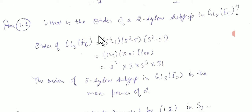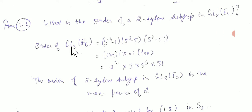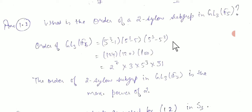Our next question is: what is the order of the 2-Sylow subgroup in GL3(F5)? First we find the order of GL3(F5), which is (5³−1)(5³−5)(5³−5²), giving 124 × 120 × 100.